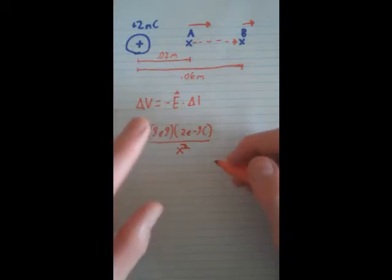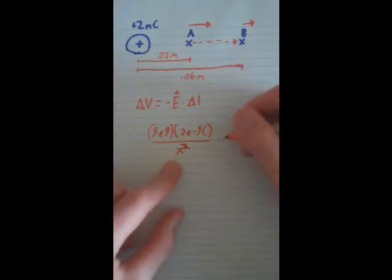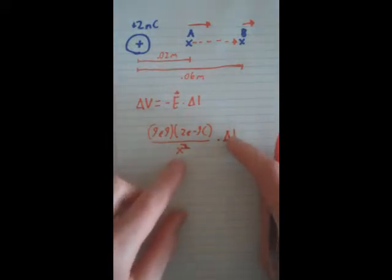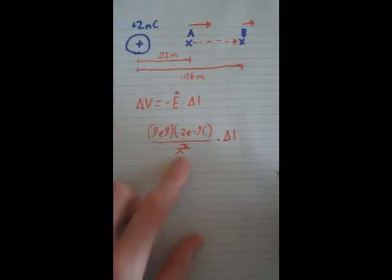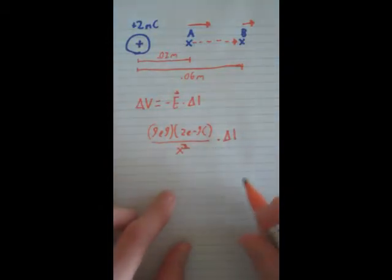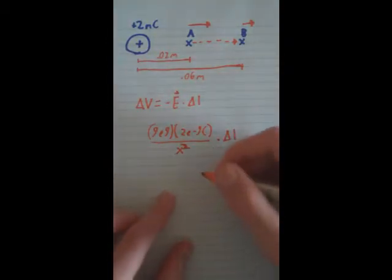And that times our delta L. And sorry to change units here, but these are both the distance units. Delta L is the change in distance, and x is our distance. So, we can write delta L as dx, essentially.